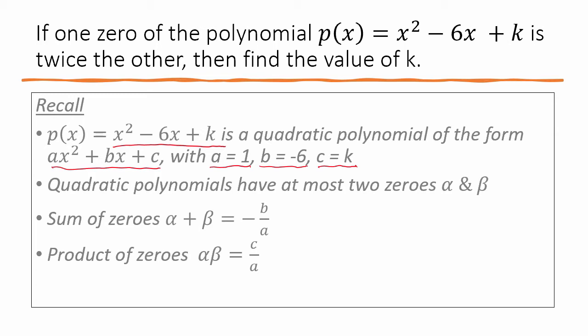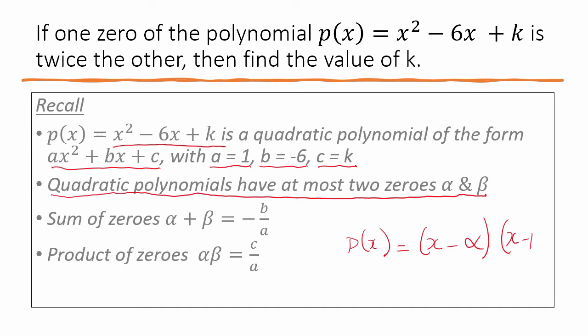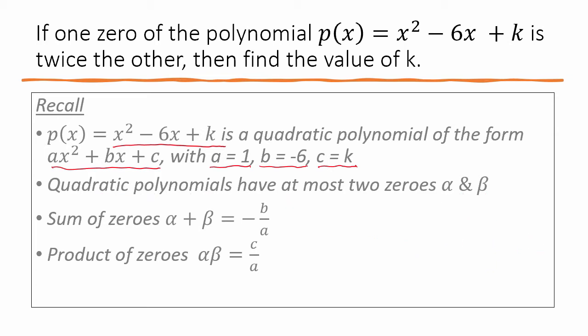The second thing to remember: a quadratic polynomial has at most two zeros. These zeros are alpha and beta. Sometimes alpha might equal beta, so you only have one zero. Sometimes there is no real solution.